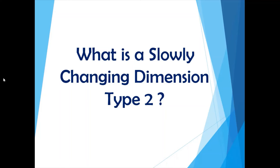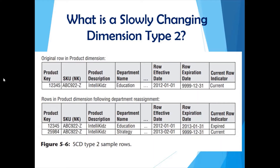The second question: what is a slowly changing dimension type 2? What if you actually want to see the historical records related to a product description as well? Then you need to go for the type 2 slowly changing dimension. In the original row you have product description as IntelliKits and department name as Education. When you want to update that record, you insert another record with the same SKU and same product description but with the new department name — Strategy.